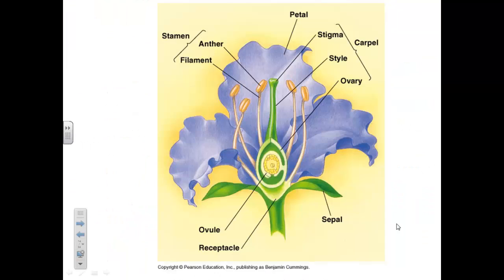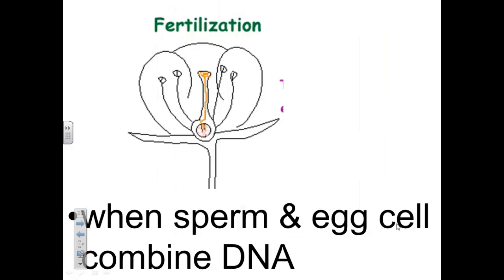Here is the diagram again of the parts of a flower — make sure you have these parts labeled in your notes. Once pollination takes place, a tube grows from the pollen down to the egg cells in the bottom of the pistil. Special cells called sperm cells travel down the tube and join the egg cells. This joining of cells is called fertilization, and it is the first step in the life of a new plant.